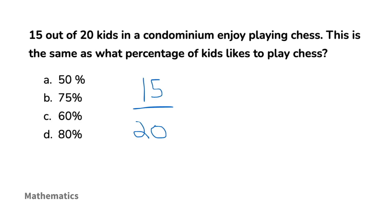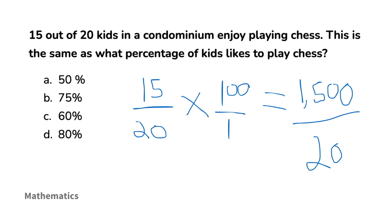Now let's work through this. Remember that 15 out of 20 means 15 over 20. To express this ratio as a percentage, multiply the ratio by 100, which gives us 1,500 over 20. This gives us the answer of 75%. The expectation is that you remember how to do the basic math, such as long division — 1,500 divided by 20. So we've got 75%.